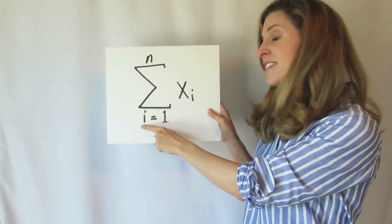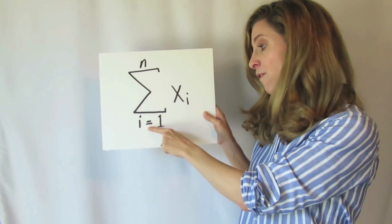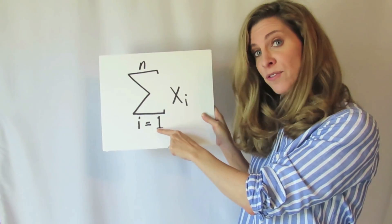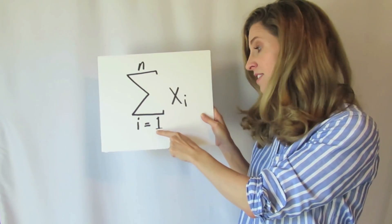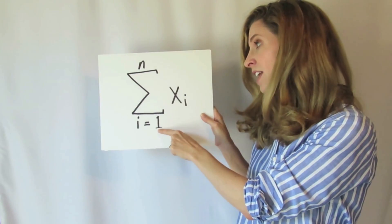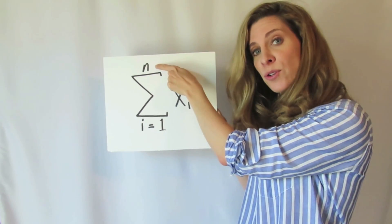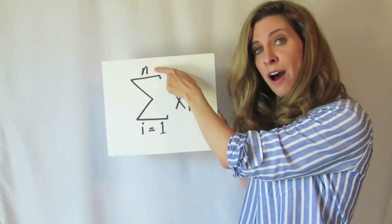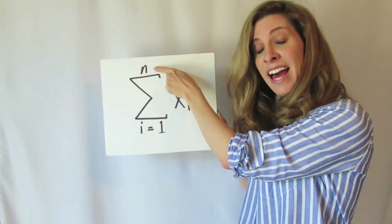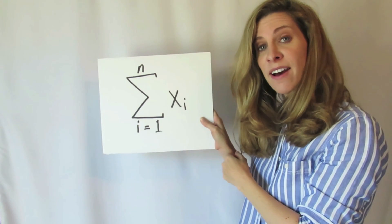The sigma notation is telling you to start with the first observation here — this is the beginning point, i equals 1 — and add up to the nth observation, the last observation that you have.